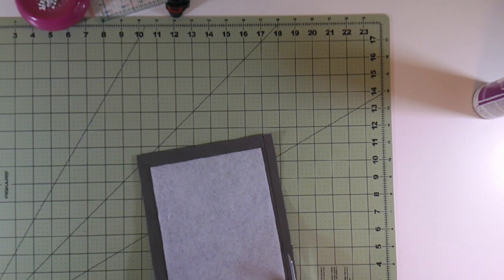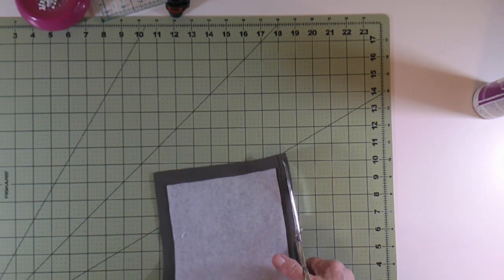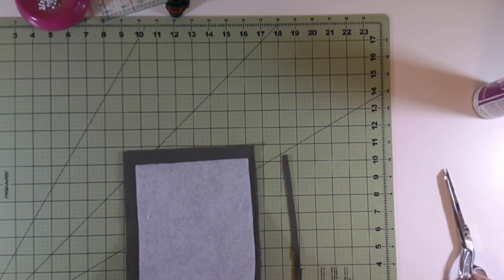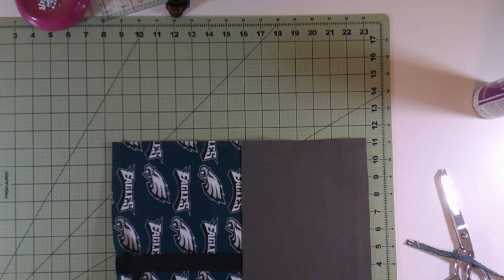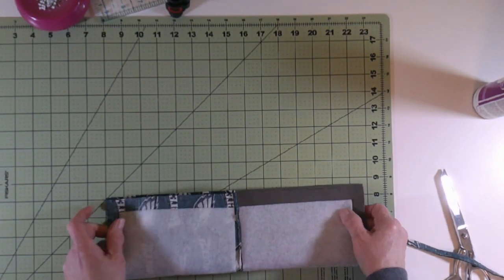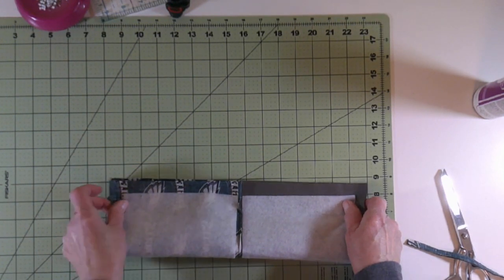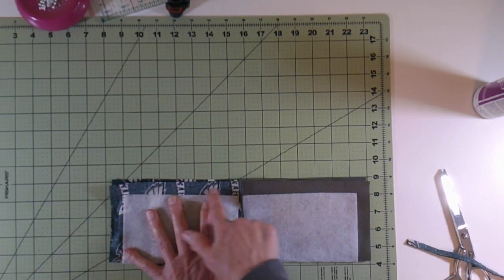Now I just want to trim that seam to about a quarter of an inch. And unfold this and then fold it together lengthwise.